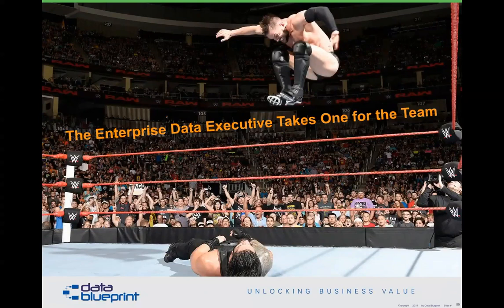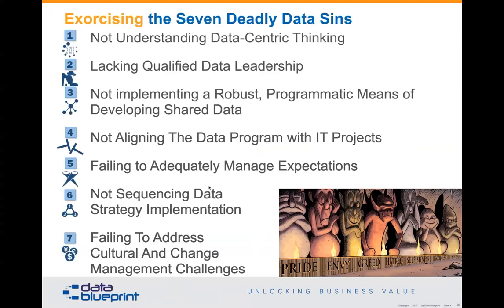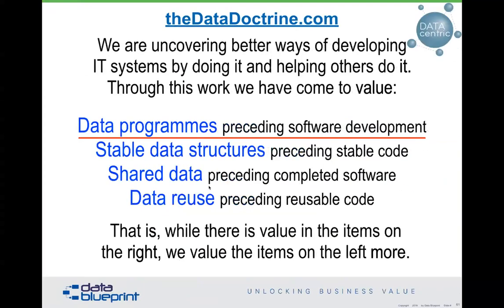Obviously, the first thing a CDO should do is get rid of the seven deadly data sins. Let's get to the number one issue: not understanding what we mean by data-centric thinking. I mentioned the Agile Manifesto, and this is a version I repurposed for data — calling it specifically the data doctrine. The language is the same: we are uncovering better ways of developing IT systems by doing it and by helping others do it. Through this work we have come to value these four tenants, and I'm going to walk through them briefly in the remaining eight minutes.